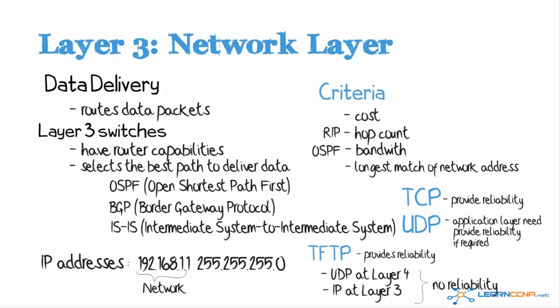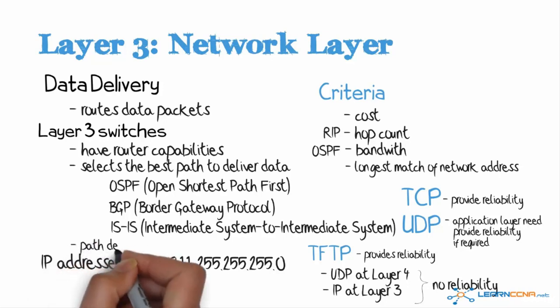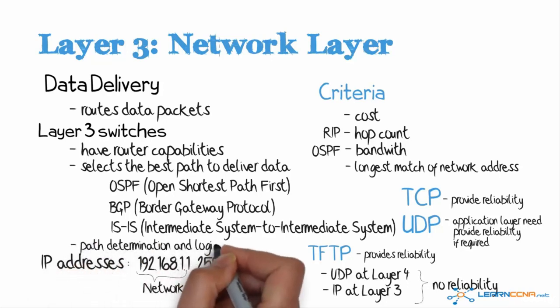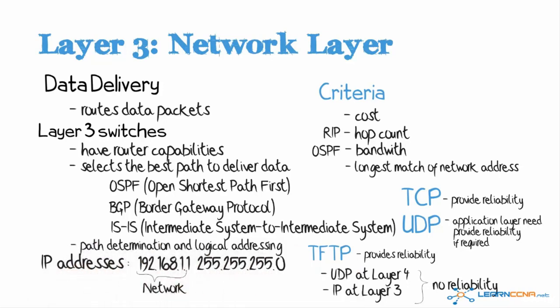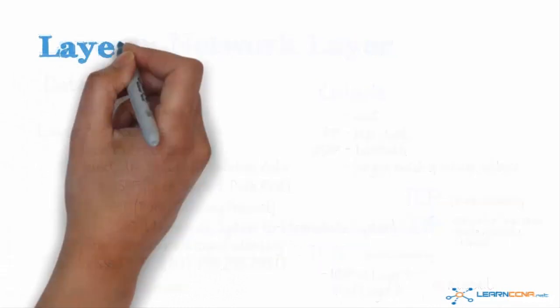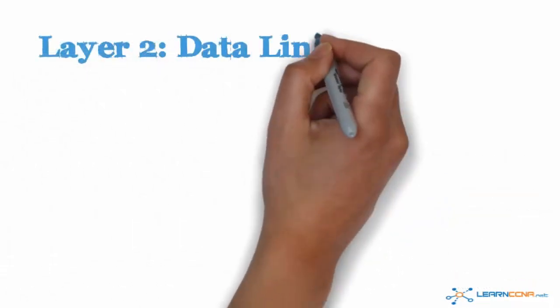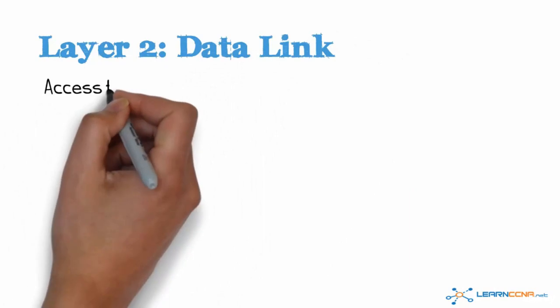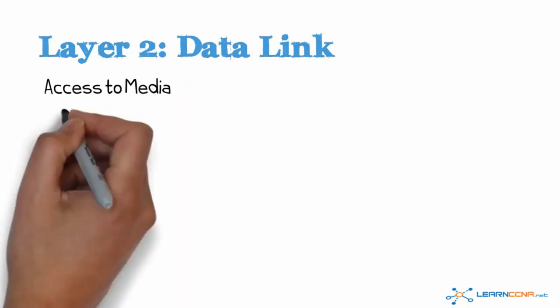The network layer, or layer 3, provides path determination and logical addressing. Layer 2, or the data link layer, provides physical addressing and access to media.